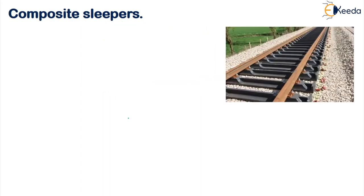The last type is composite sleepers, which use a combination of different material varieties. These are not yet widely used in India, but abroad they are being used in large quantities. They may be a combination of any of the different sleeper materials we have discussed. Thank you.